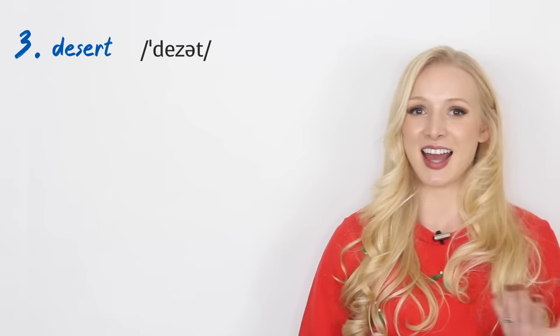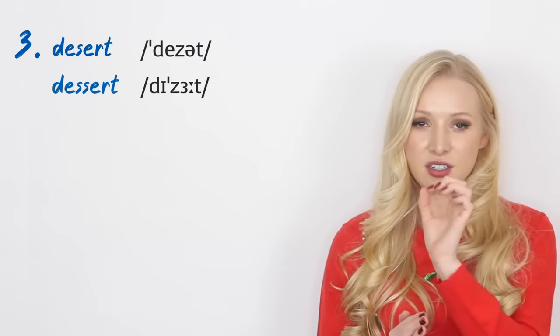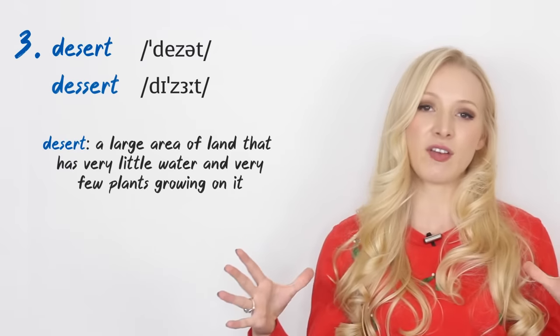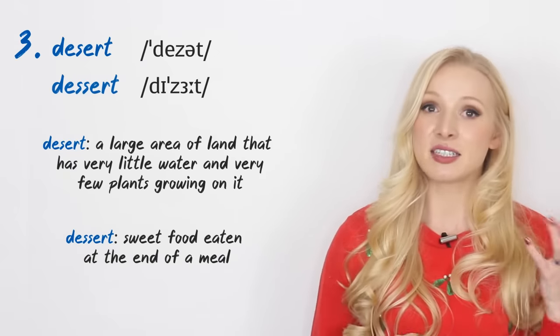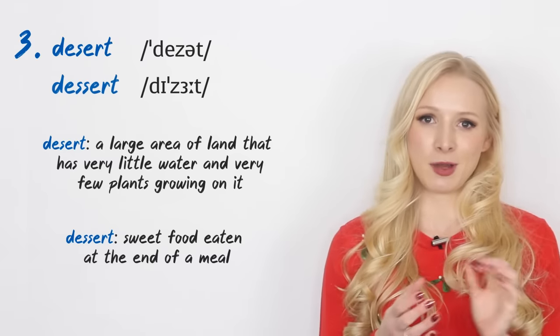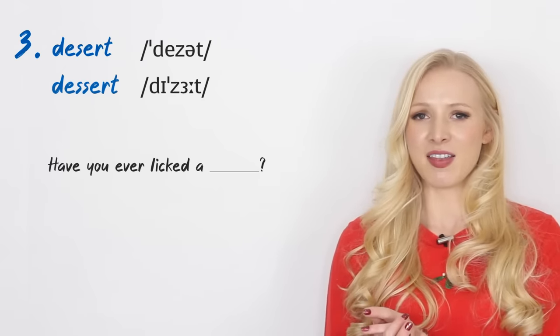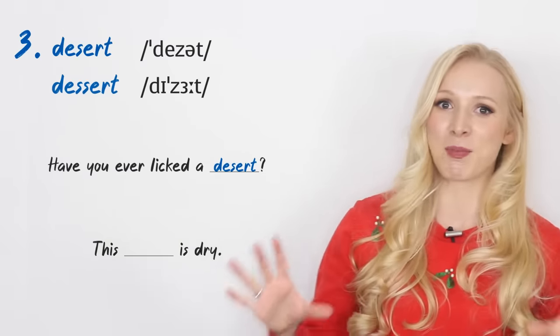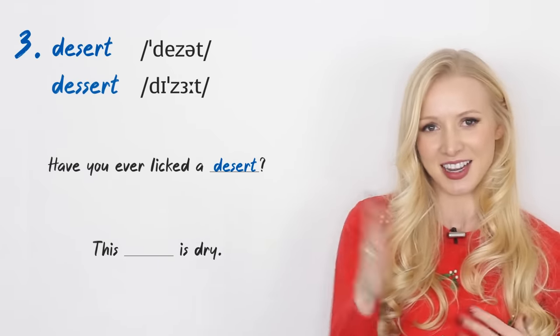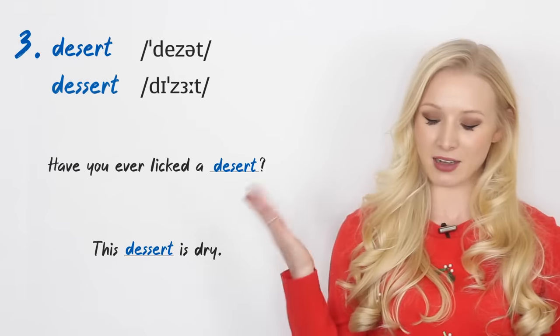Number three, we have desert and dessert. So they only differ in one extra S in dessert, but the pronunciation is different. The stress is on a different syllable in each: desert, dessert, desert, dessert. A desert is a large area of land that's very dry and has no water because it's dry and very few plants. A dessert is a sweet food eaten typically at the end of a meal. Okay, which spellings am I referring to in these two separate sentences? Number one: have you ever licked a desert? And number two: this dessert is dry. Okay, I was just trying to confuse you then. The first one is desert as in a dry place. Have you ever licked a dry place, a desert? And this dessert, pudding, sweet food is dry. That's valid. A dessert could be very dry. Give yourself a pat on the back if you've got that right.